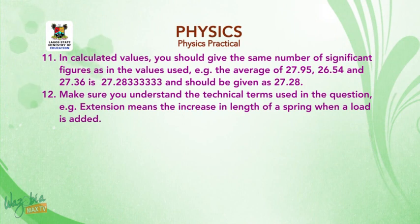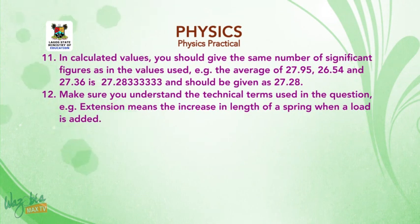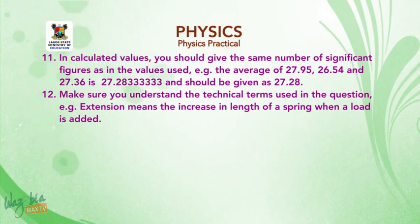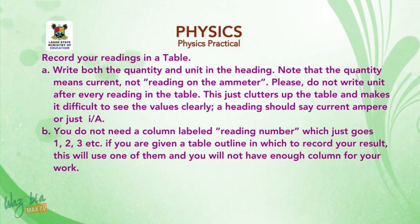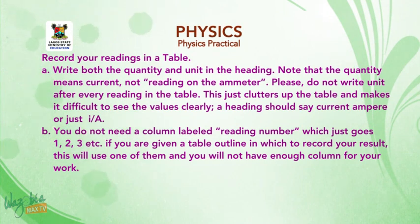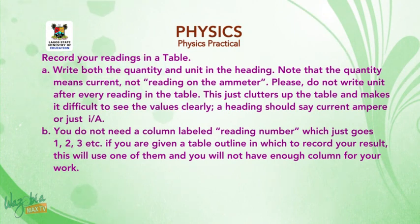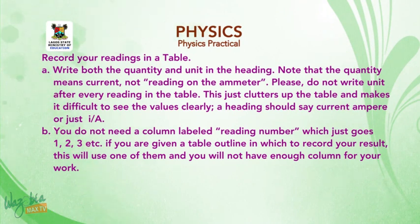Make sure you understand the technical terms used in the question. For example, 'extension' means the increase in length of a spring when a load is added. When recording your readings in a table, write both the quantity and unit in the heading. Note that the quantity means current, not 'reading on diameter'. Please do not write the unit after every reading in the table, as this clutters the table and makes it difficult to see the values clearly.